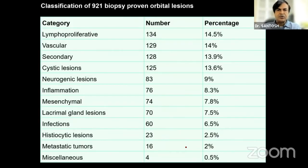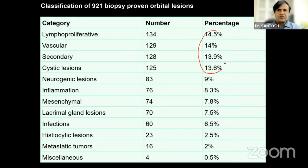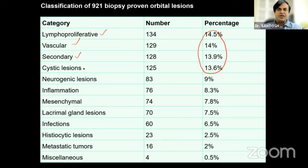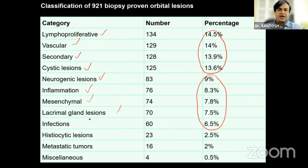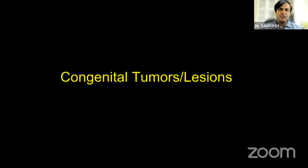Before we start, we should know the general frequency of these tumors. In about 1000 patients, the top four are: lymphoproliferative — could be lymphoma, benign reactive lymphoplasia, or atypical lymphoplasia — then vascular, secondary, and cystic. The next group are neurogenic, inflammation which is biopsied and proven, mesenchymal, lacrimal gland lesions, and infections. Everything else is a minority. Knowing the relative frequency of tumors in India makes you better at identifying what you're dealing with.